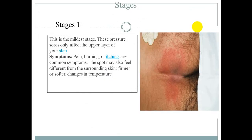There are four stages of pressure sore. Stage 1 is the mildest stage. The upper layer of the skin shows redness due to continuous pressure. The skin may have sensations of burning or itching, and temperature changes — feeling warmer or cooler. The skin is intact but discolored.